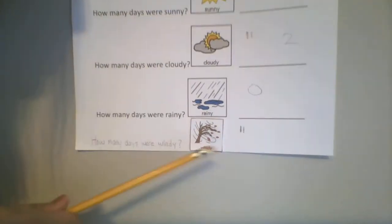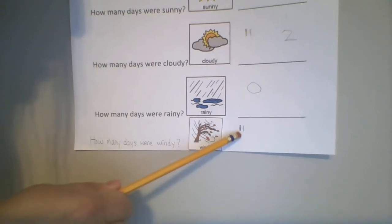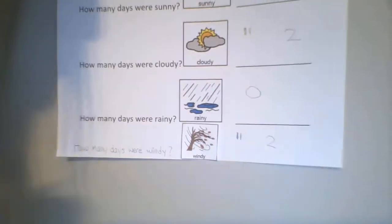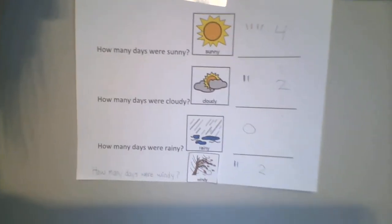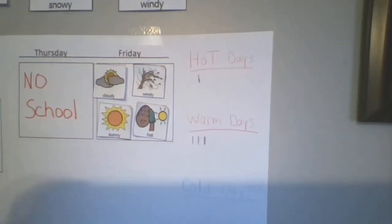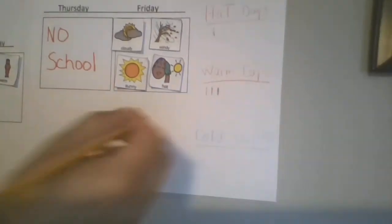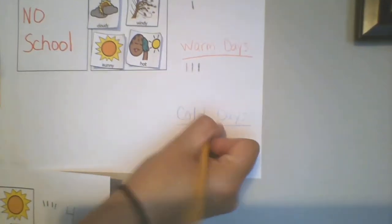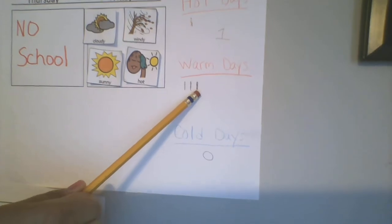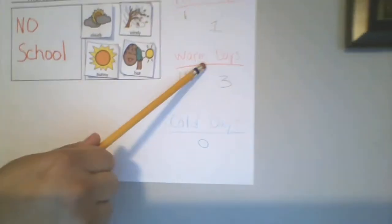Here's rain. Friends, we didn't have any rain. We had zero days of rain. And here's our windy. We'll count one, two. So friends, we had two days that were windy. Okay, there's our weather chart. And up here, let's count our hot days and our warm days. We had zero days that were cold. No cold days.